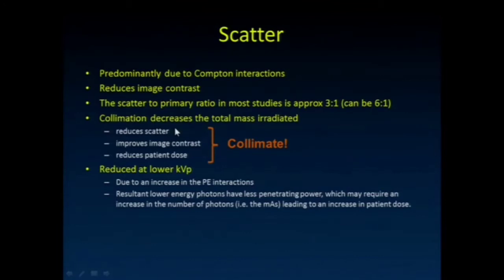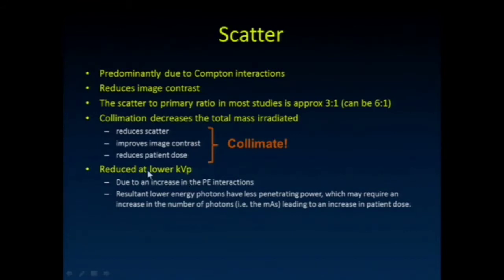We always want to make sure we collimate. Collimation reduces scatter because it reduces the volume of irradiated tissue. If you irradiate less tissue, those x-rays can't end up scattering back into your area of interest. It improves image contrast and also reduces patient dose.